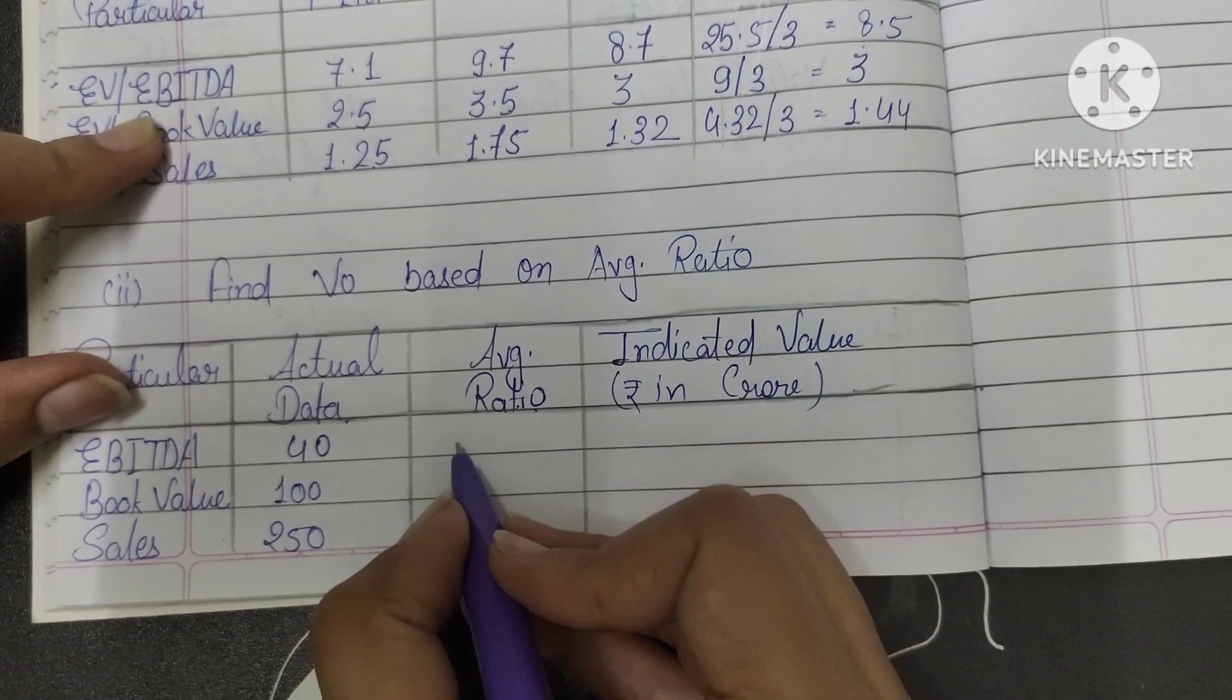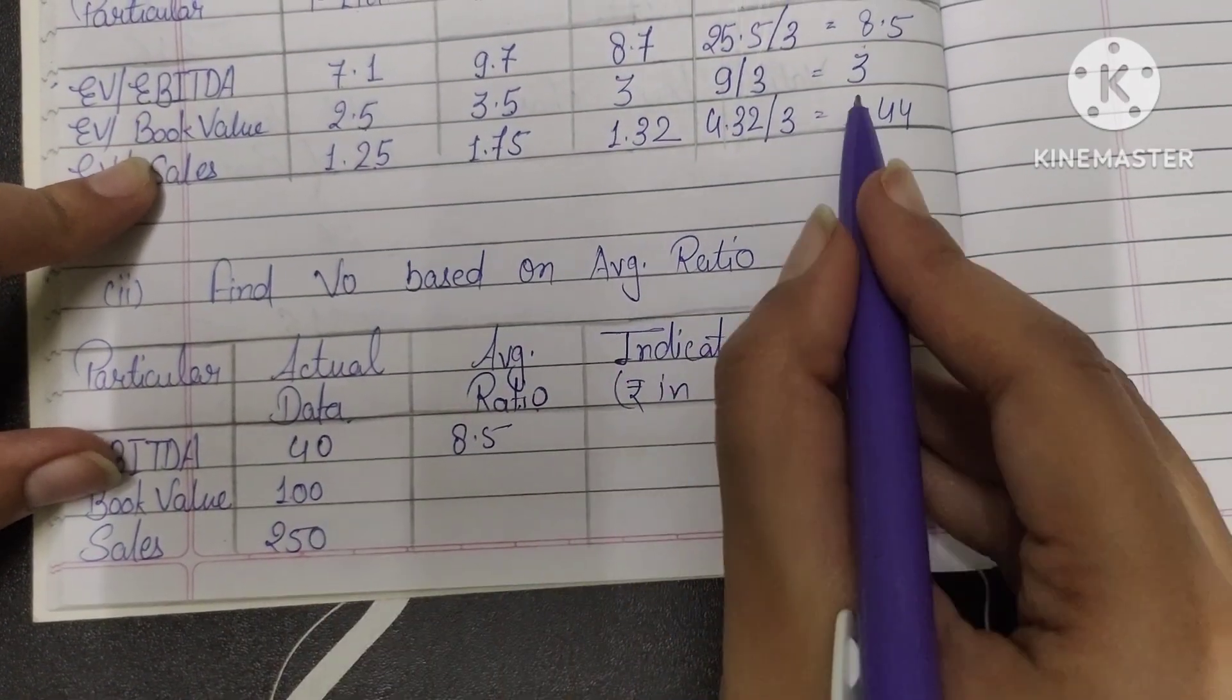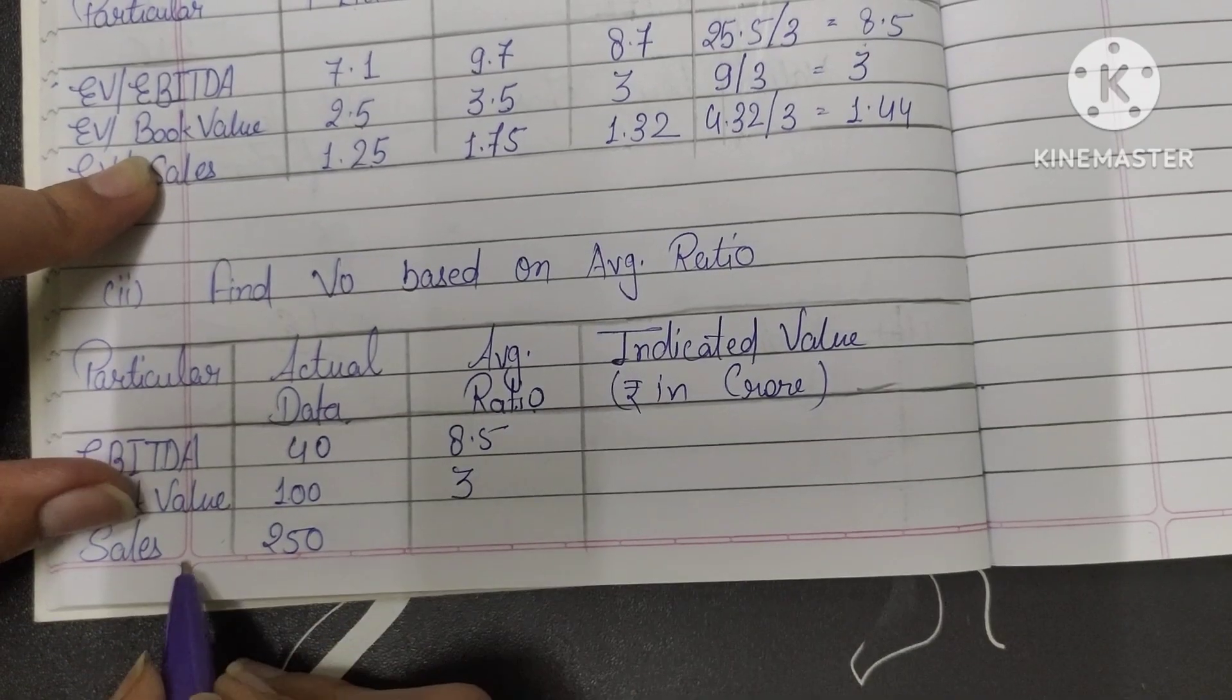After that, average ratio we already calculated. So average ratio for EBITDA, how much did we get? 8.5. We'll write 8.5 here. Book value was 3. We'll write 3 here. Now for sales, average ratio, how much did we get? 1.44.